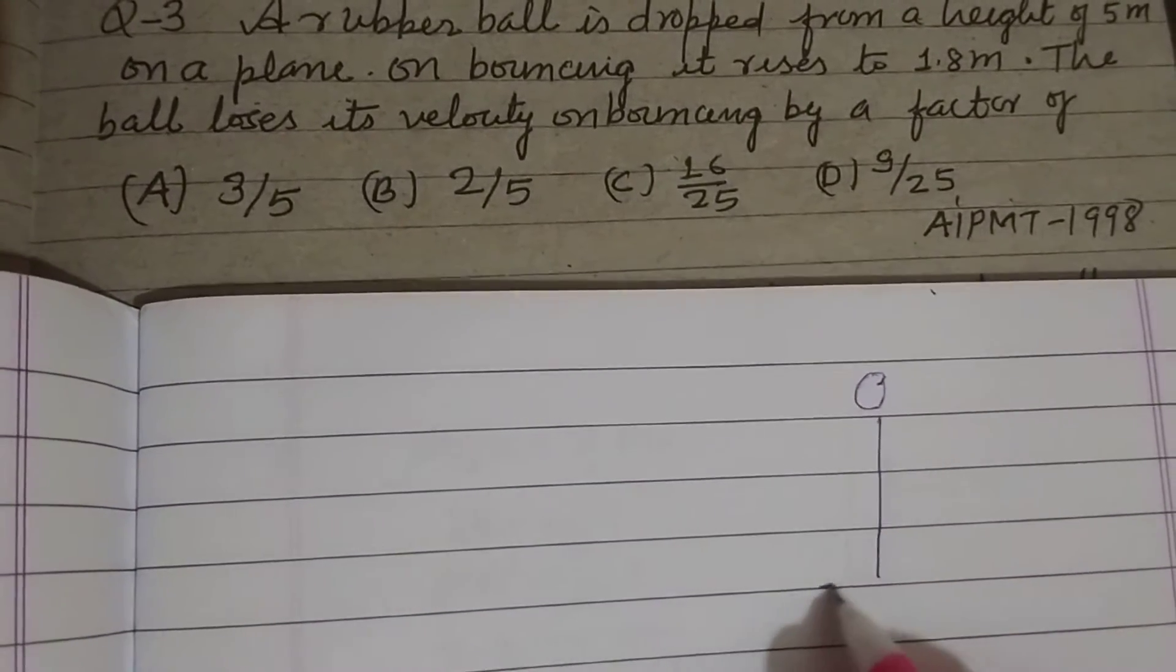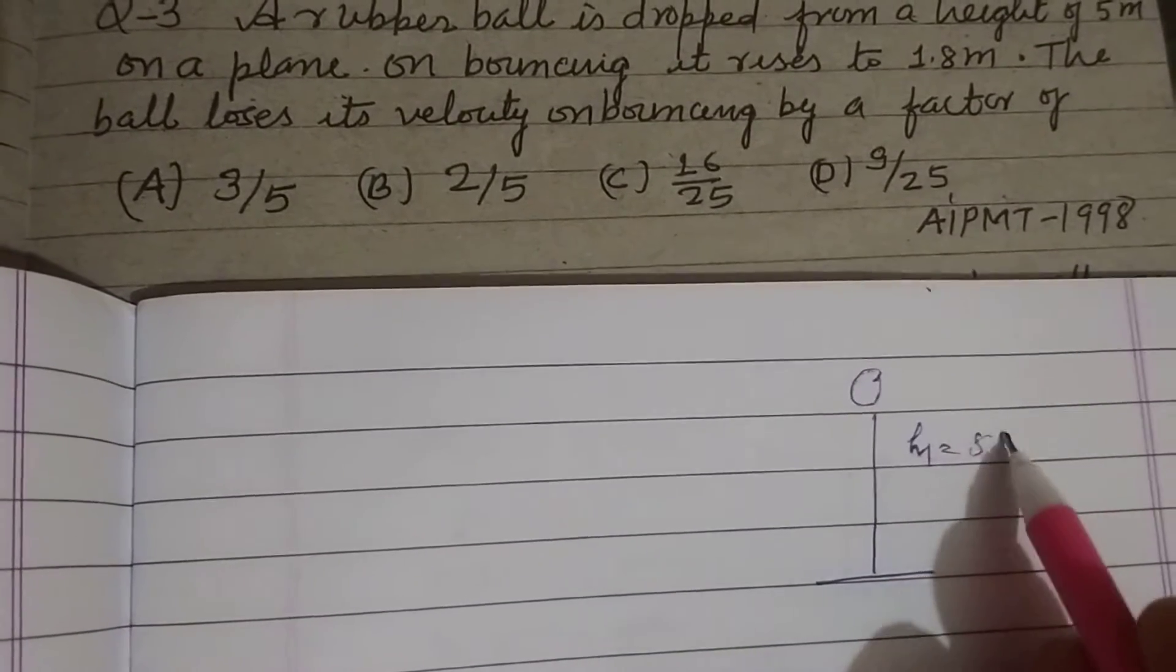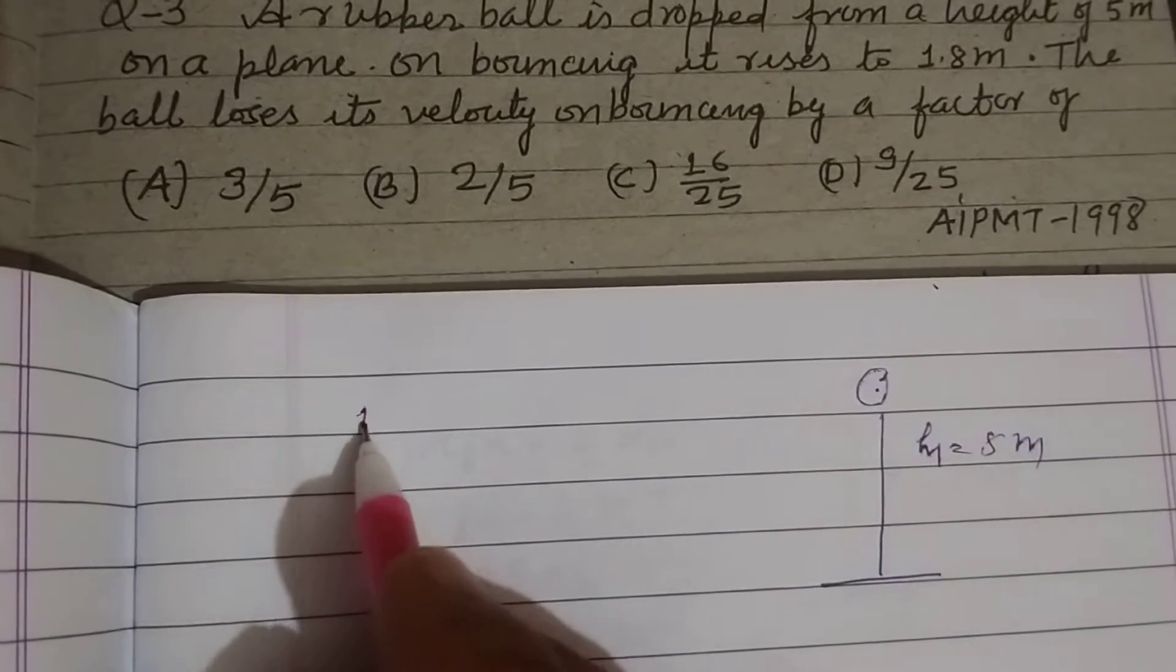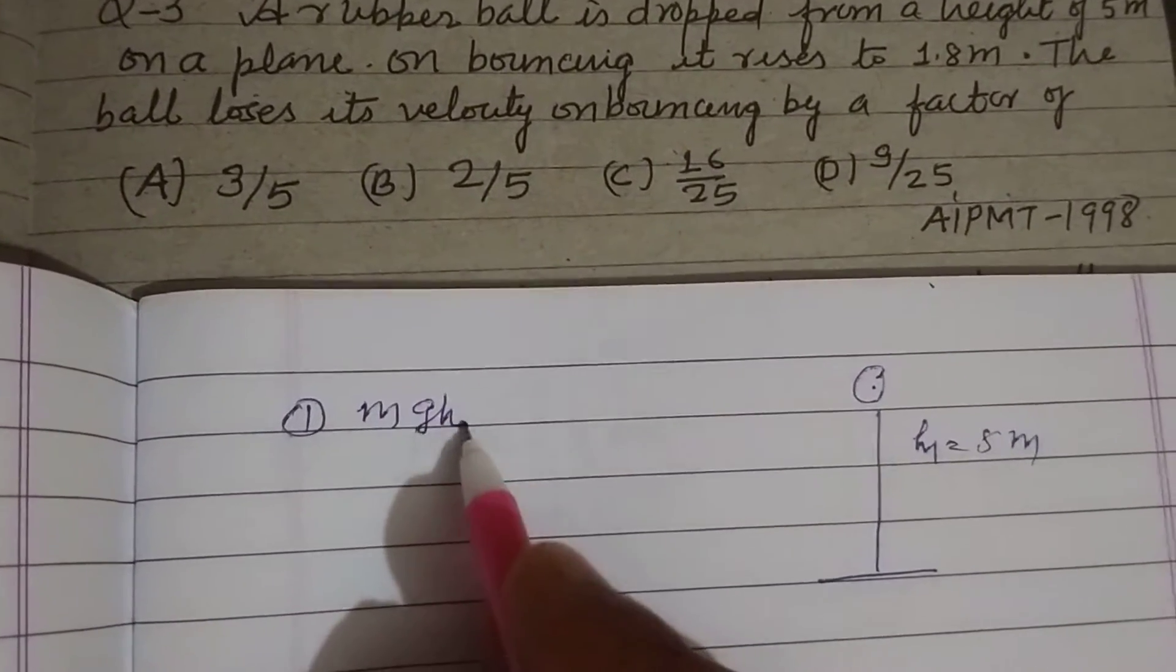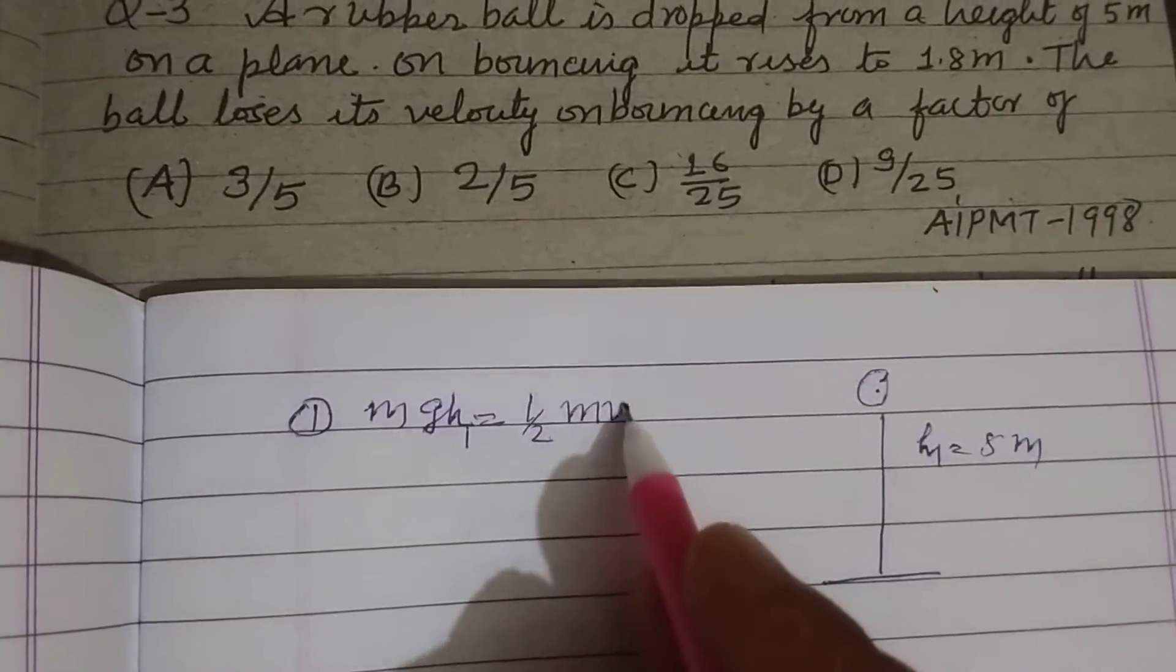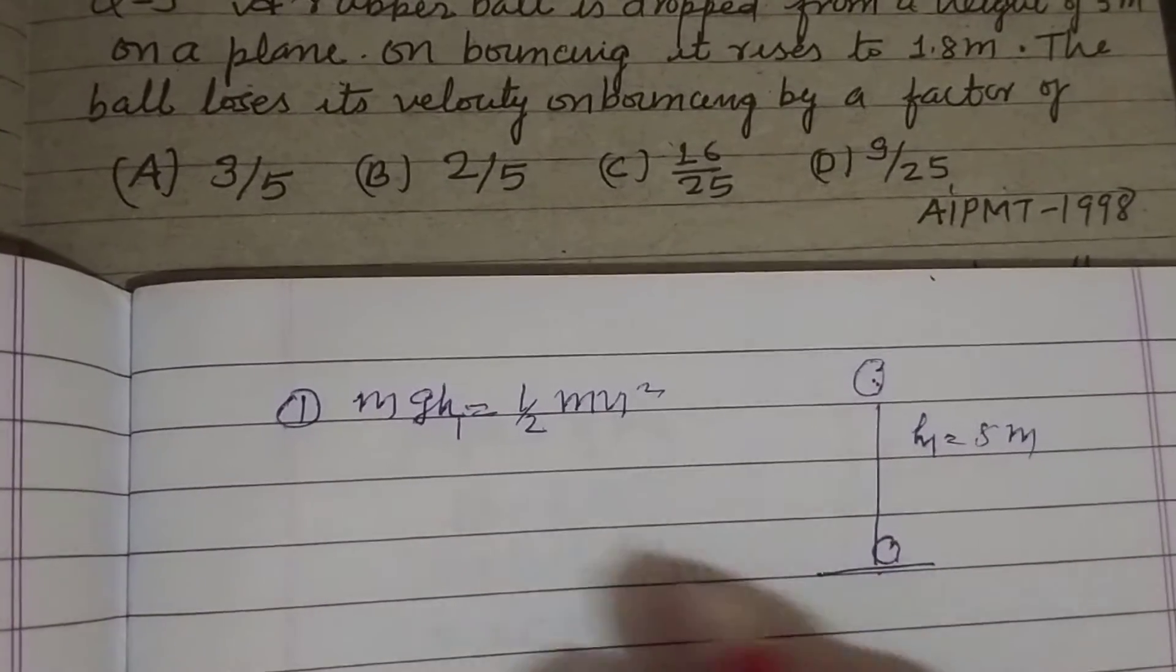This is a ball dropped from height h1 equal to 5 meters. So here its potential energy in the first case: mgh1 equals half mv1 squared. This potential energy changes into kinetic energy when it strikes the ground.